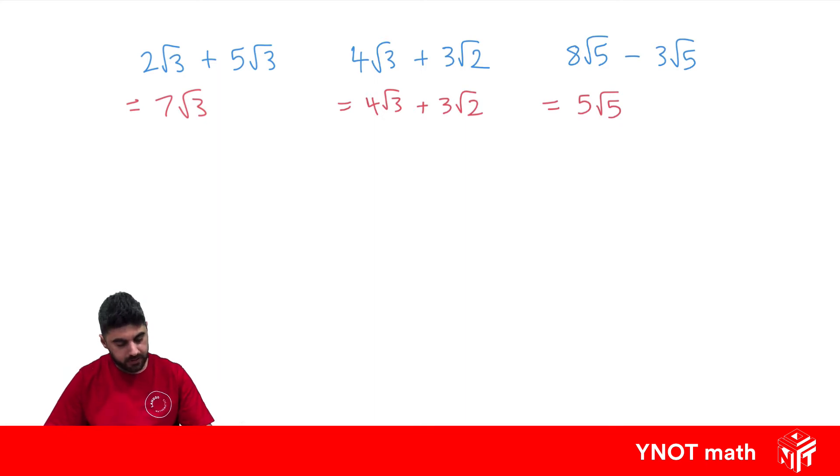What about root 54 minus root 24? At first glance, we can't subtract these surds because they're not like surds. But these surds can be simplified. So let's simplify them first.